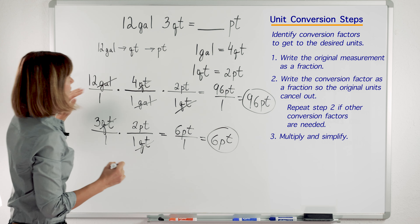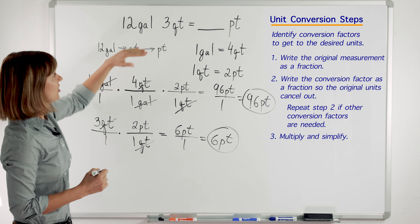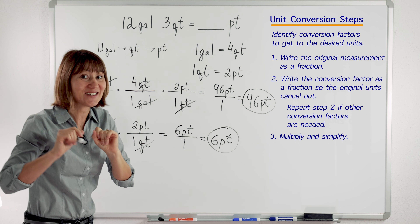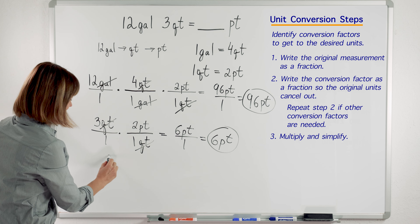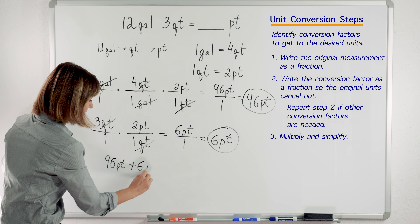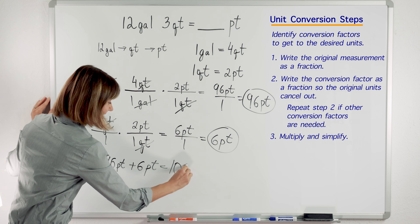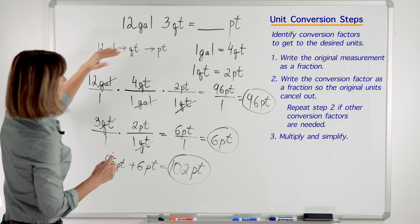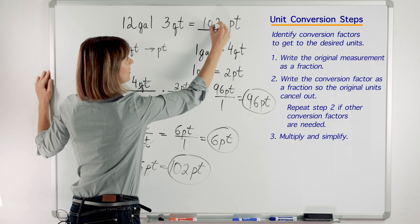Now, what do we do? We started with 12 gallons and 3 quarts. We changed each quantity into pints. Now we just need to add them together. 96 pints plus 6 pints — we have 102 pints. So that's our answer: 12 gallons and 3 quarts equal 102 pints.